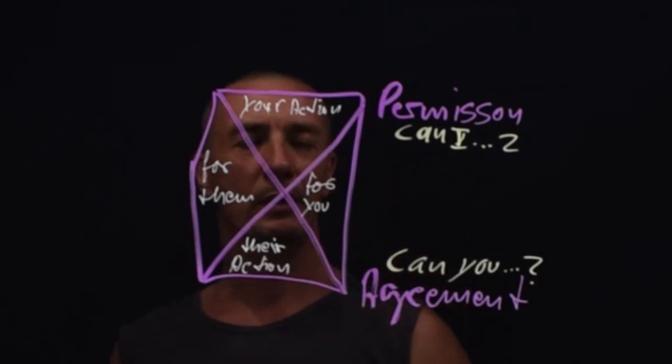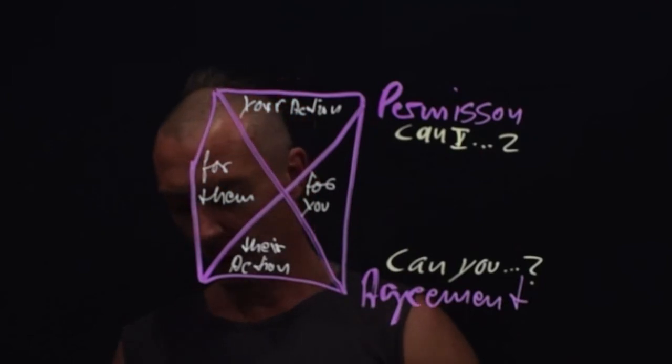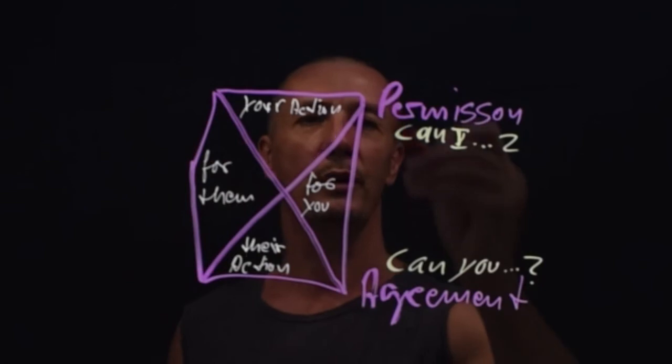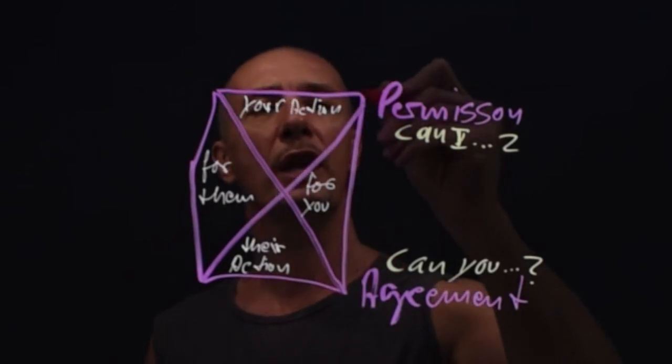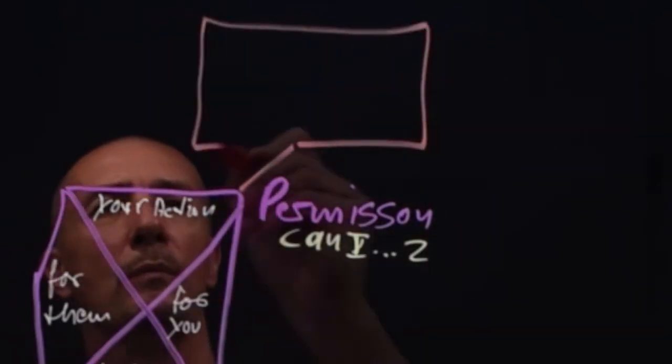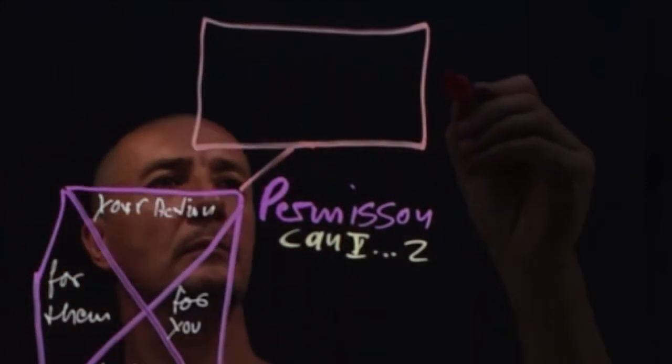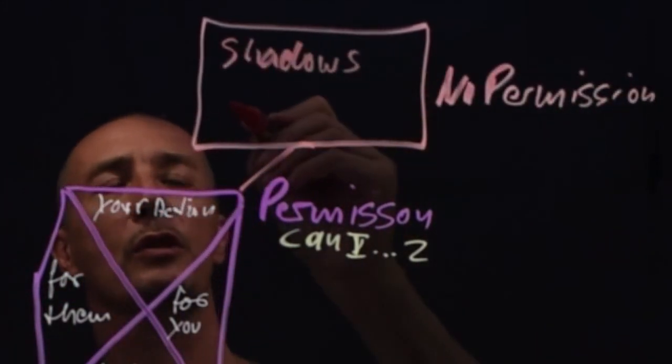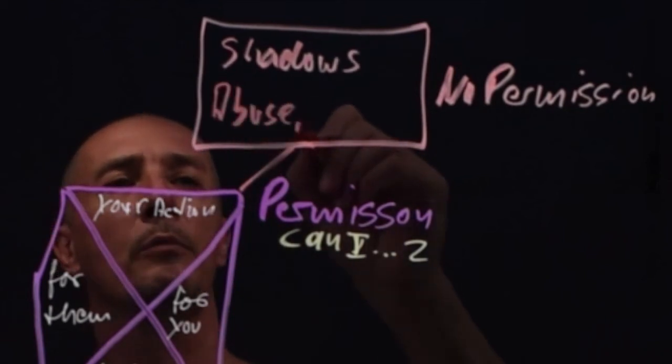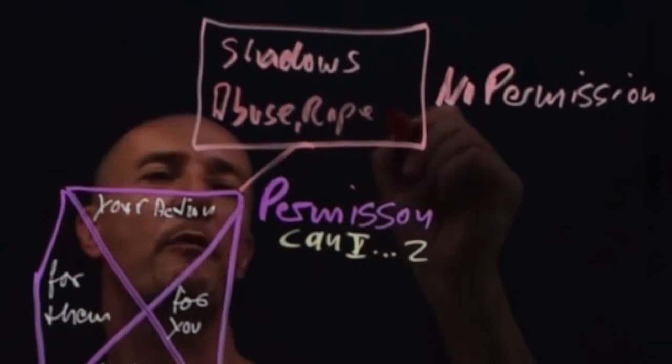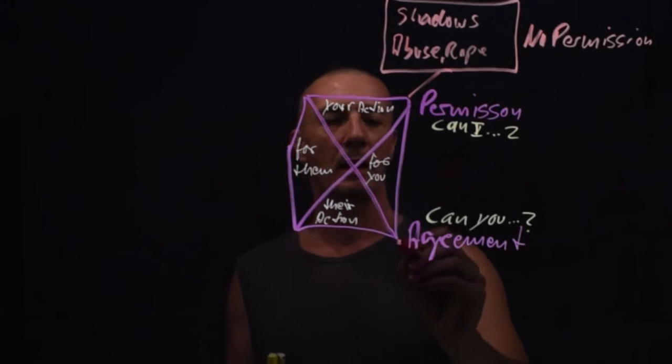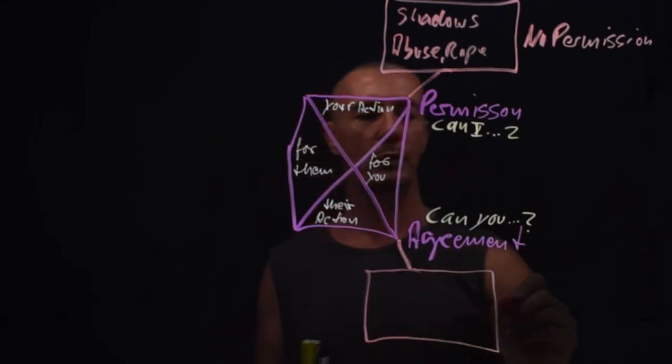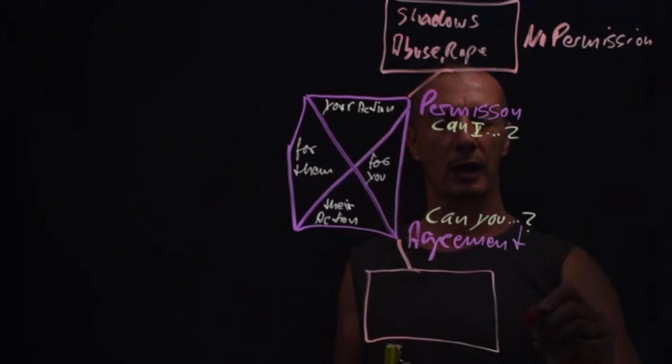So that makes this dynamic very simple, very easy to practice making requests. Because it becomes the next part, if you can't ask for what you want, you operate out of the shadows. So if there is no permission, that's the shadows of abuse and rape, for example.